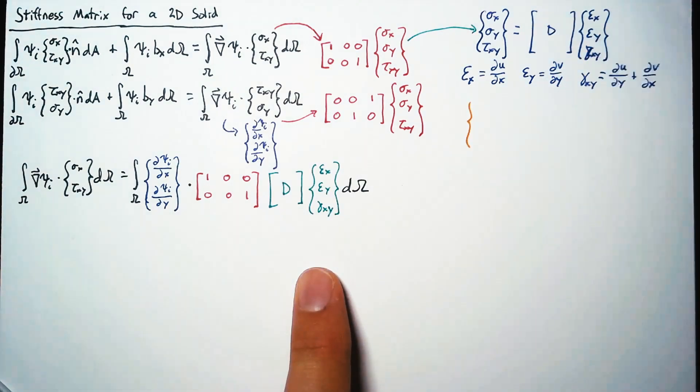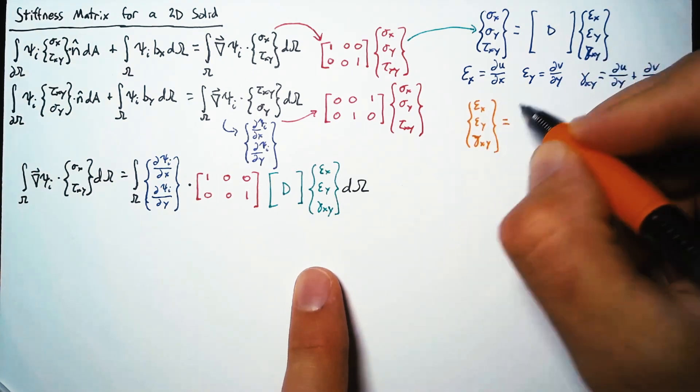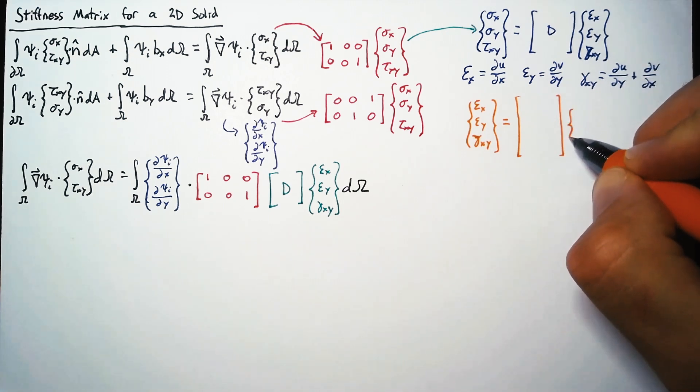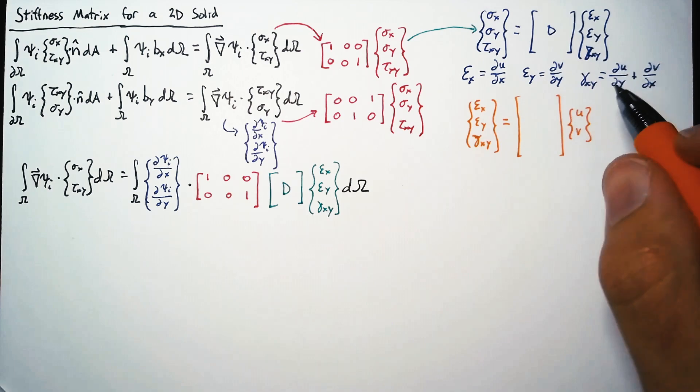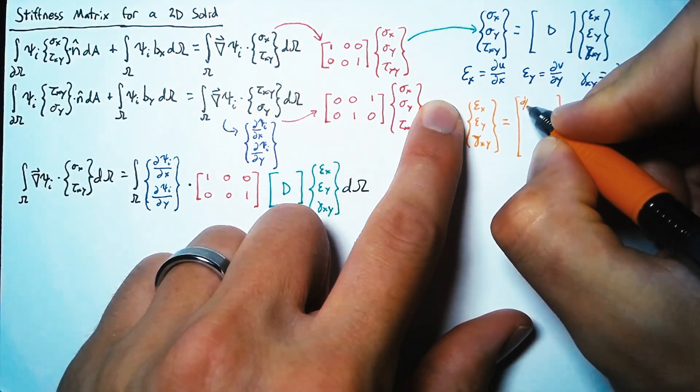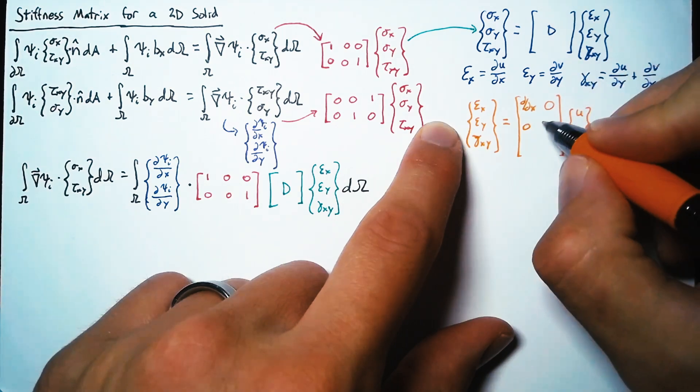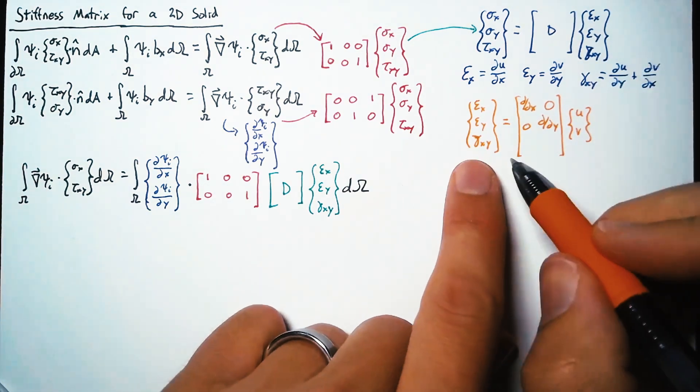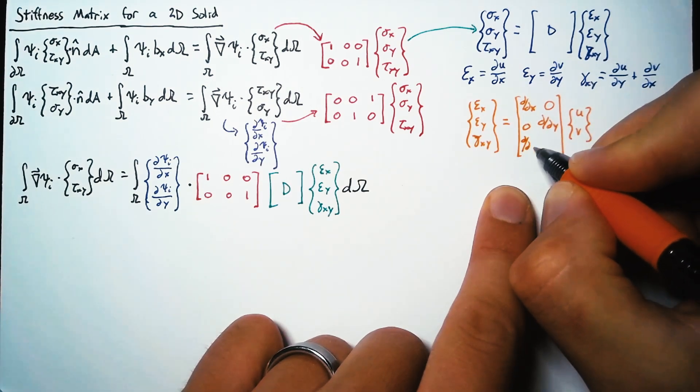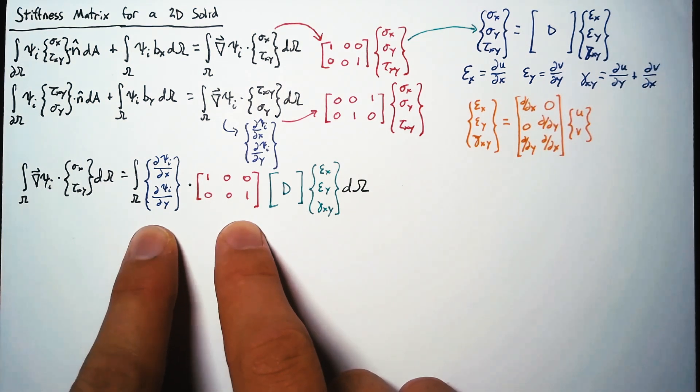Now these strains we can expand. So epsilon x, epsilon y, gamma xy is actually equal to a matrix of derivatives multiplied by our u and v displacements. Epsilon x is du dx, so we need a d by dx in this first location, nothing to do with y. Epsilon y has nothing to do with u, but it's the y derivative of v. And then gamma xy has both u and v components, the y derivative of u and the x derivative of v.